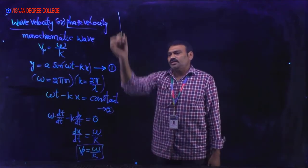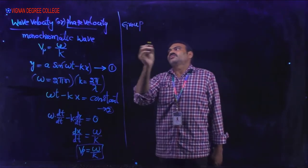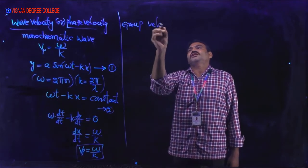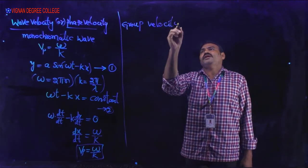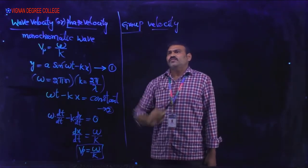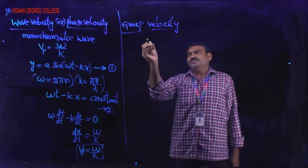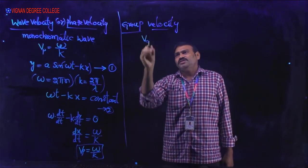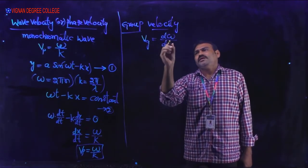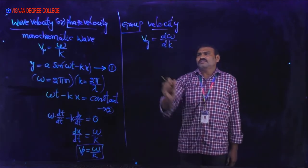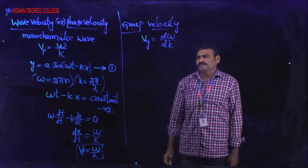Group velocity. A pulse consists of two or more waves having slightly different frequencies. Group velocity is represented by V_g = dω/dk. Now let us derive an expression for the group velocity.